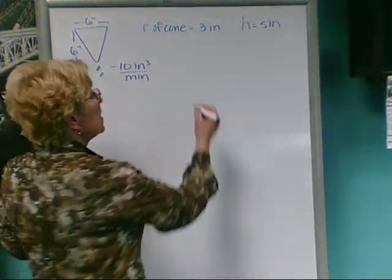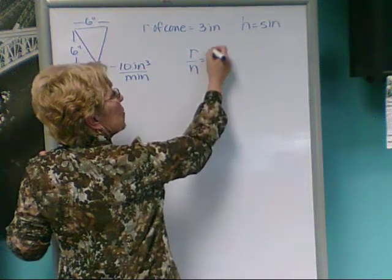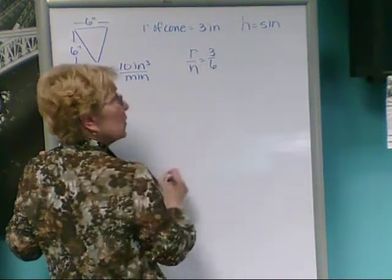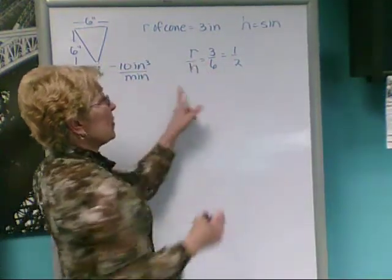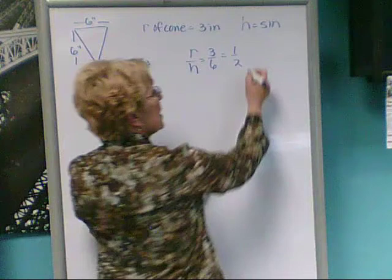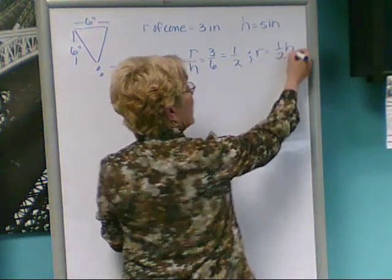And we can make a proportion. R is to h as 3 is to 6, or 1 half. And if I multiply both sides by h, I can have a relationship that says r is 1 half h.